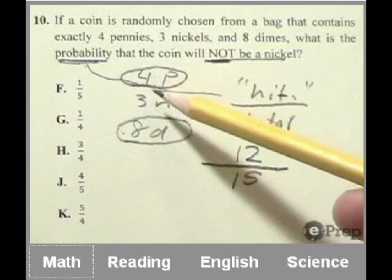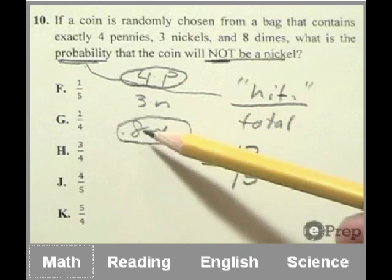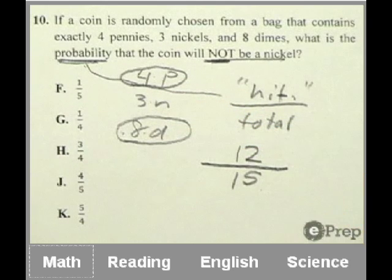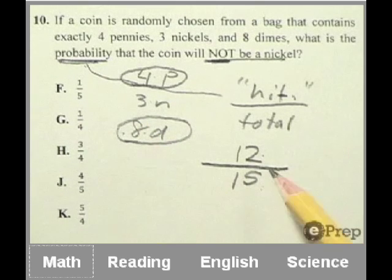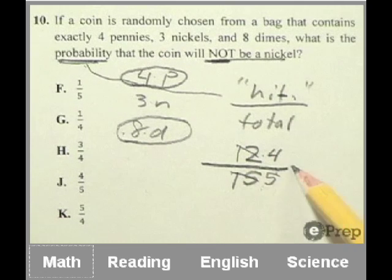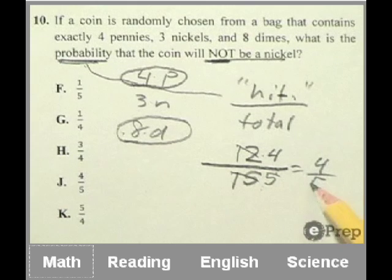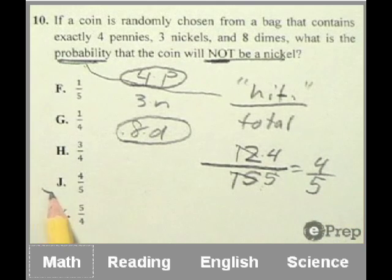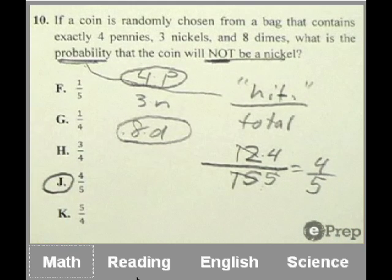So to get the total, you add up 4 plus 3 to get 7, plus another 8 gets you to 15. So the probability is 12 out of 15. If you look, you're not going to see that answer. This still needs to be reduced. I know that 3 goes into 12 four times, and 3 goes into 15 five times. So my final answer is going to be 4 fifths. I'd pick J with confidence and move on.